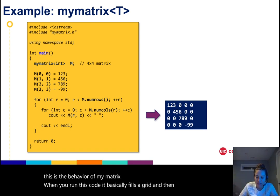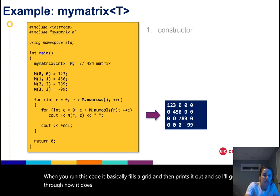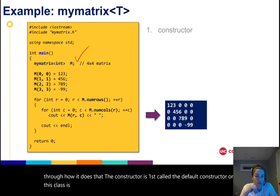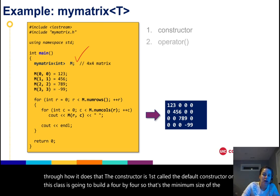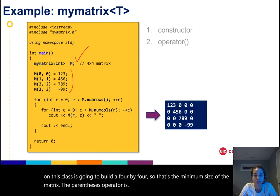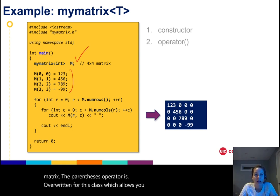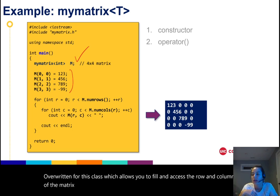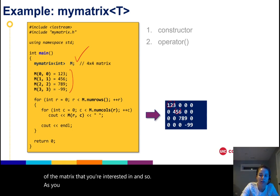I'll go through how it does that. The constructor is first called. The default constructor on this class is going to build a 4x4, so that's the minimum size of the mymatrix. The parentheses operator is overwritten for this class, which allows you to fill and access the row and column of the matrix that you're interested in. As you can see here, I'm just filling the diagonal elements 0,0, 1,1, 2,2, 3,3.